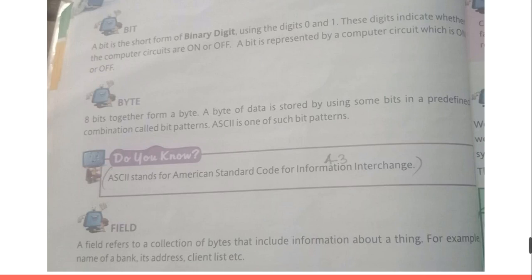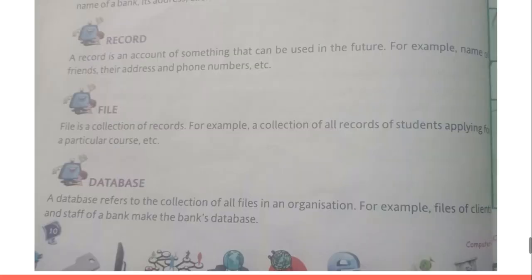For example, a table you make in which you store your admission number, name, grade, and section. The field is the column name — for example, roll number, name, admission number. They are all examples of a field.